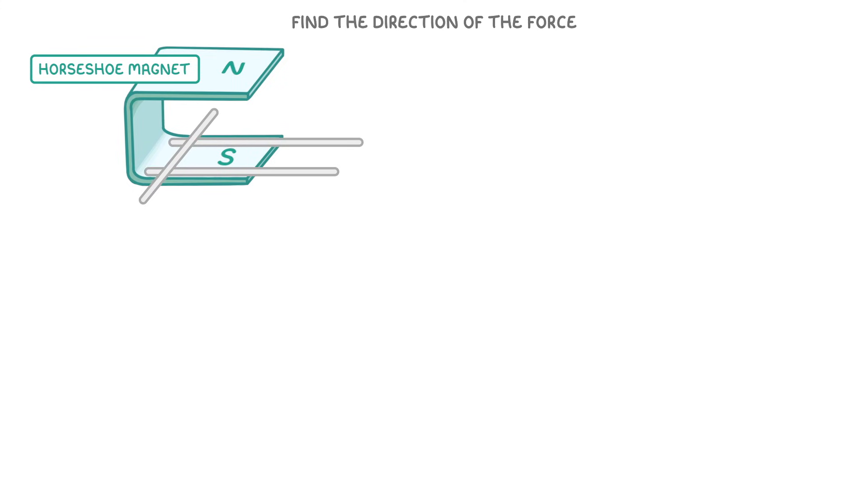Another scenario you might see the motor effect in is between the two poles of a horseshoe magnet. Between the north and south poles, we have three metal rails through which a current can flow. The two rails on the sides are fixed, but this one joining them is free to roll.